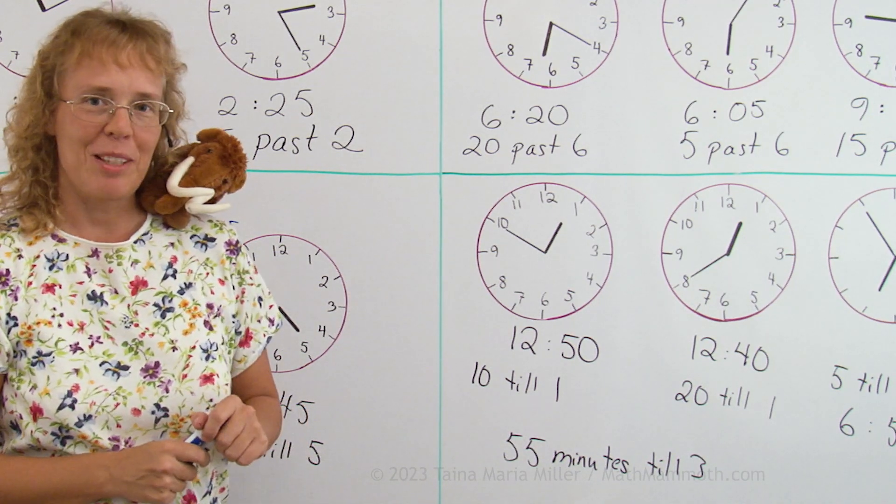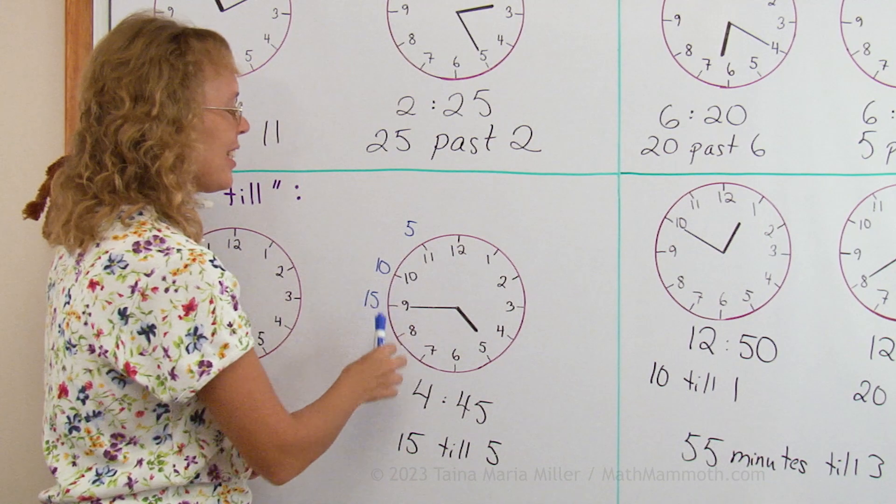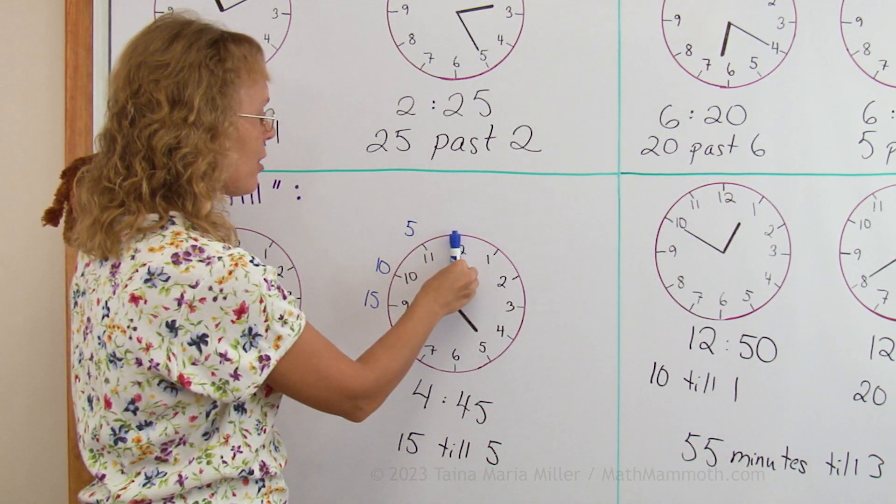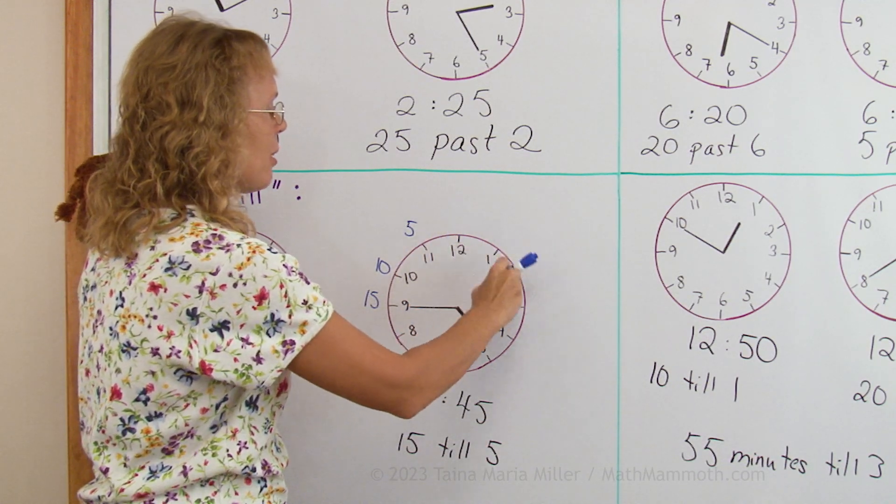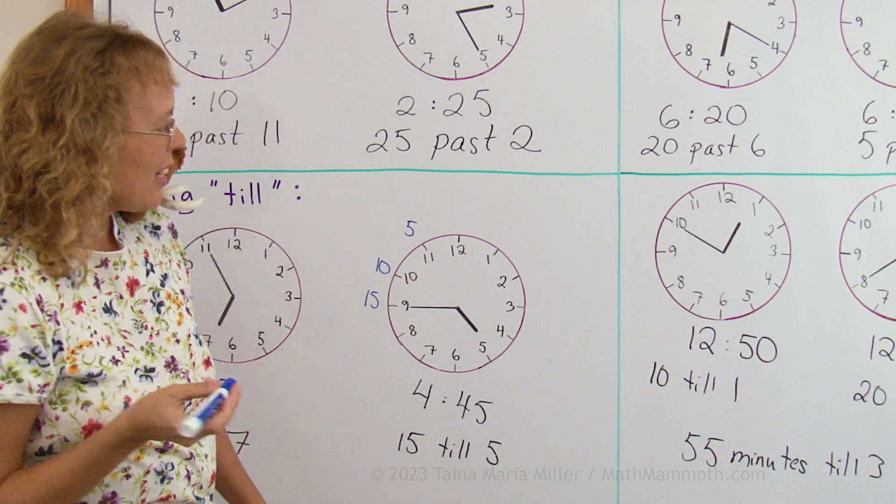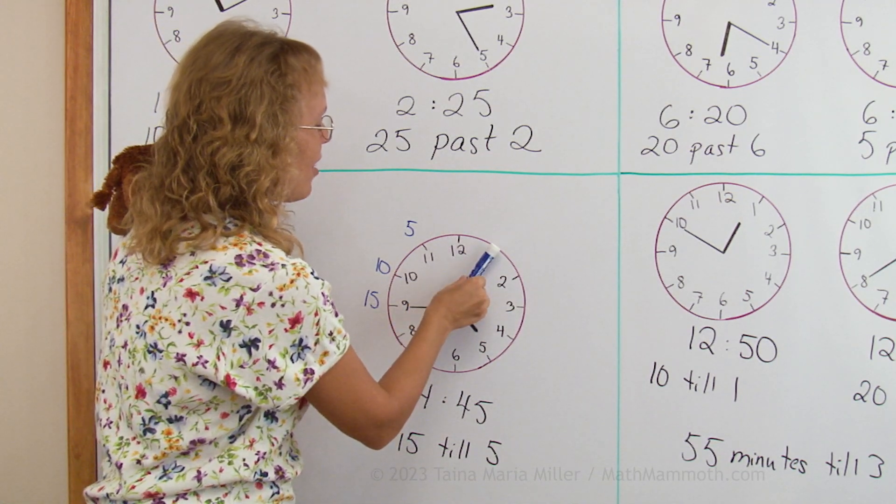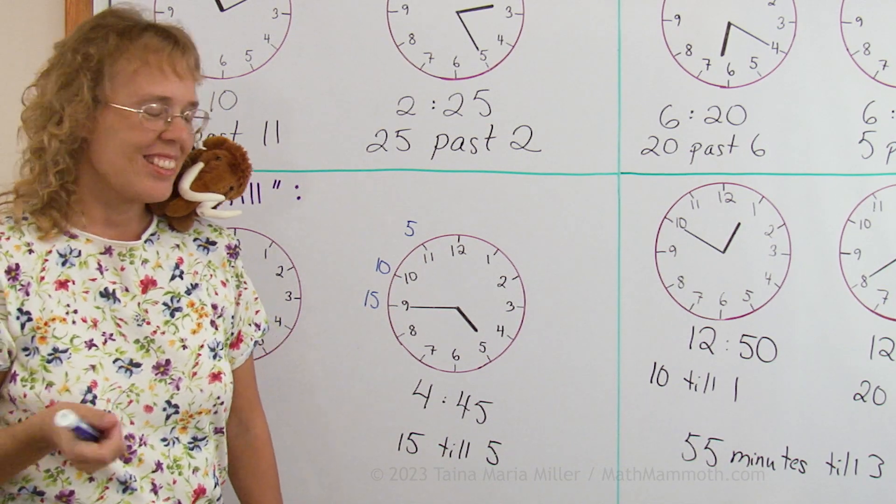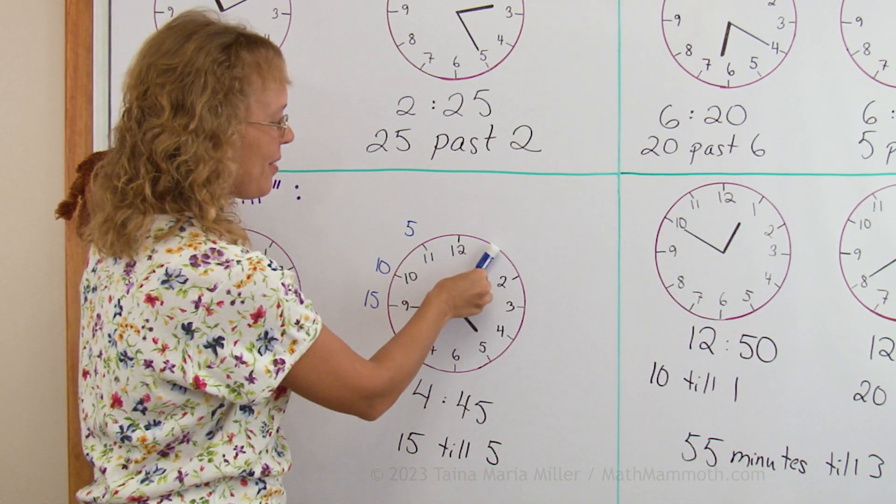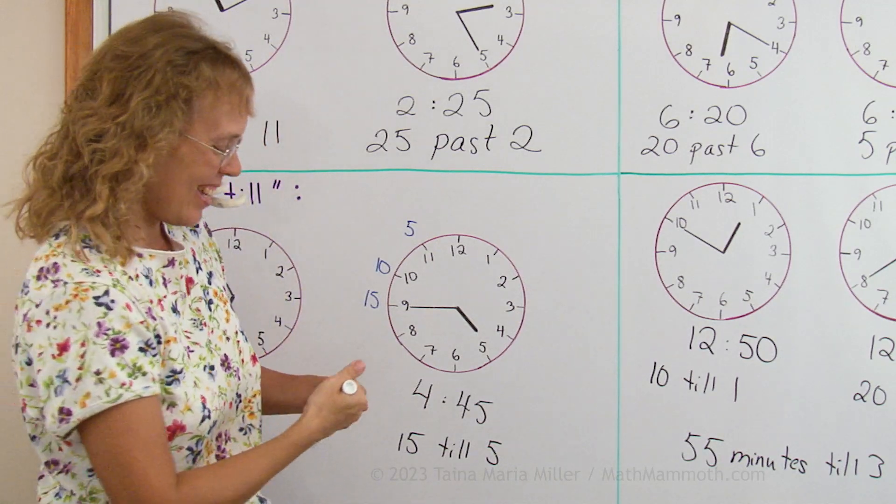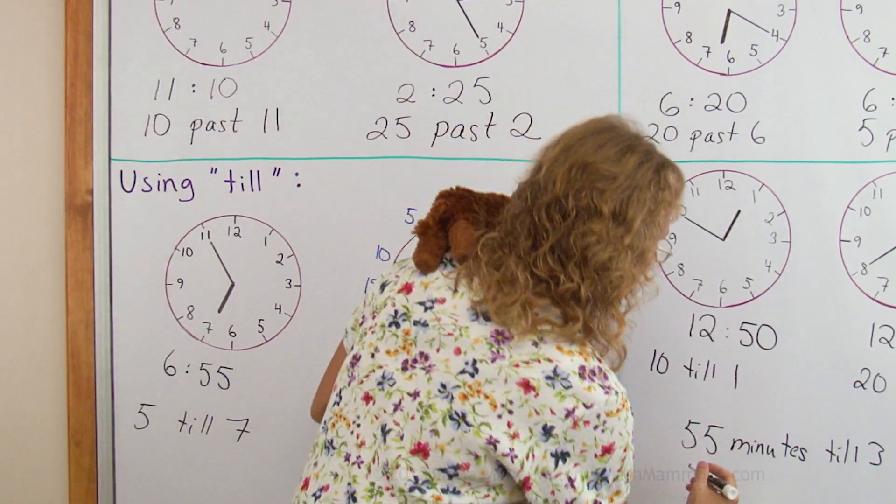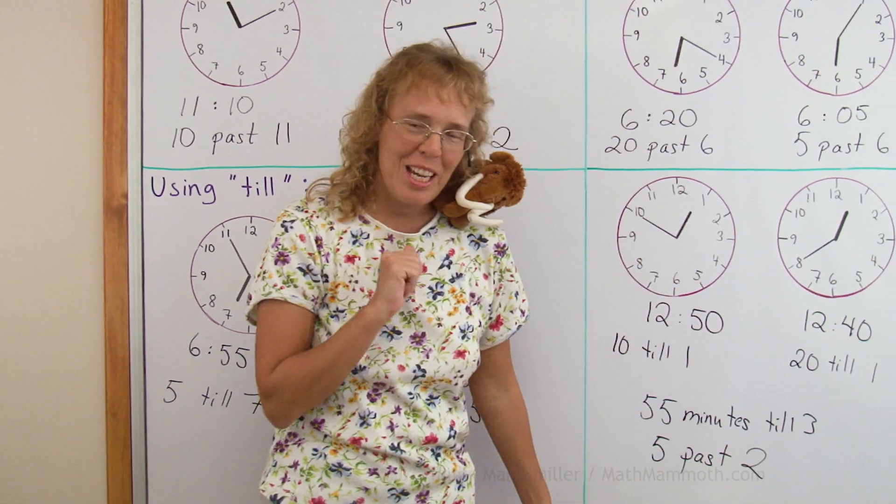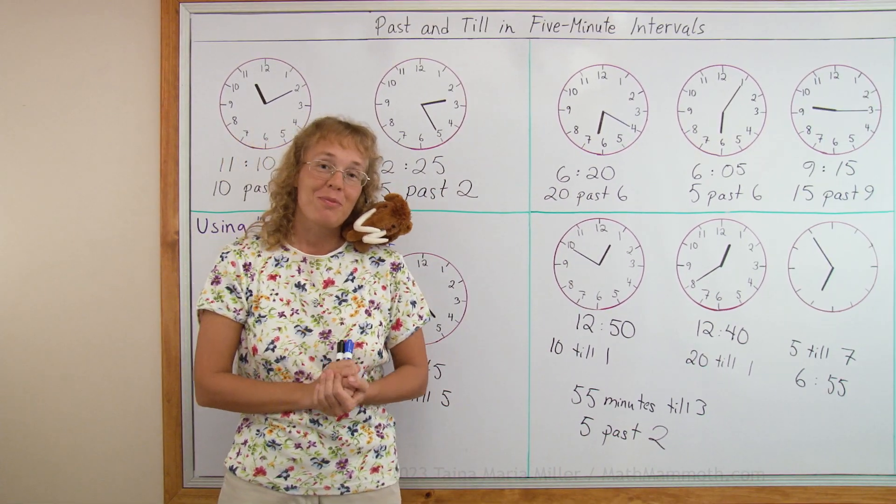You know this whole clock face is 60 minutes, right? So if my minute hand was here, it would have 60 minutes to go till the next whole hour. So when it goes here, then here it has 55 minutes to go till the next whole hour. So the minute hand is here. So that is 5 past. This is actually 5 past 2. Did you get the same? Hope so. We are done with this lesson.